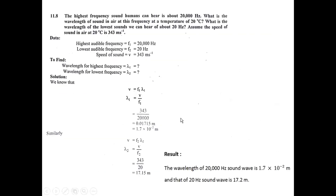Problem 11.8: The highest frequency sound humans can hear is about 20,000 Hz. We need to find the wavelength of sound in air at this frequency at a temperature of 20°C. Additionally, what is the wavelength of the lowest sounds we can hear — about 20 Hz — again at 20°C? Both frequencies fall within the human audible frequency range.